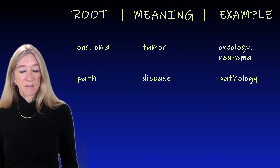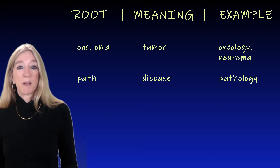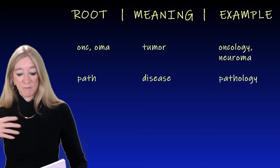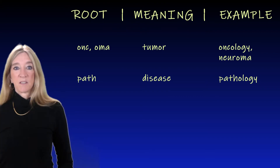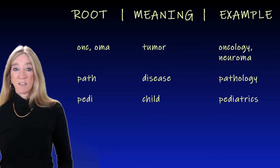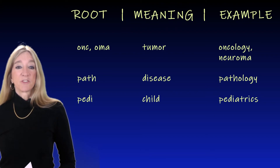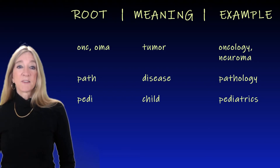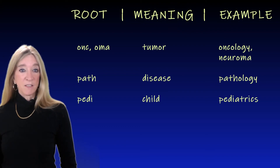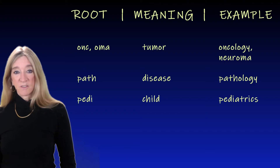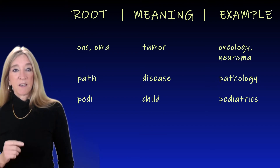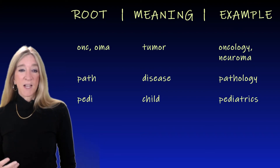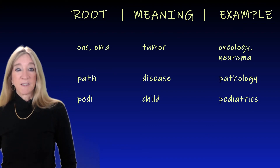The next root, 'path,' meaning disease. An example is pathology, the study of disease. We had this root earlier in the term distal myopathy — disease of the muscles distant from the center of the body. The next root, 'ped,' meaning child. An example is pediatrics, the treatment of children. Note the root 'iatr' — the same as in psychiatry, treatment of the mind, and podiatry, treatment of the foot. An iatrogenic disease is one actually caused by a physician or by treatment, usually through misdiagnosis or an unexpected adverse drug event.